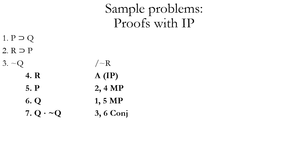Now we're ready to finish our indirect proof. We exit out of the scope of our assumption R, so line eight is lined up with the initial premises. We can conclude the negation of our original assumption R — so that's going to be tilde R. The justification is four through seven IP, four through seven being the indented lines that fell under the scope of our assumption.